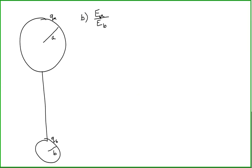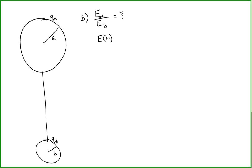How do we find the ratio of the electric fields on each sphere? We've shown previously that the electric field due to a sphere of charge as a function of distance is equal to KQ over R squared, where R is greater than or equal to the radius of the sphere. Since these are conductors, all the charge lies on the surface, as shown using Gauss's law.